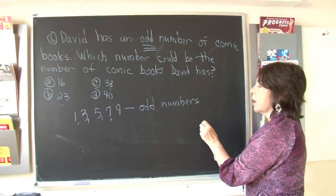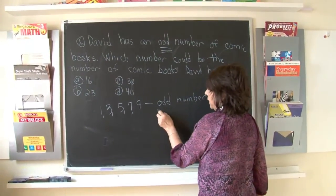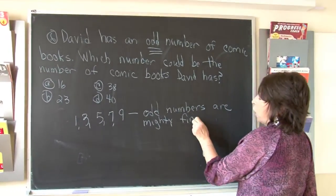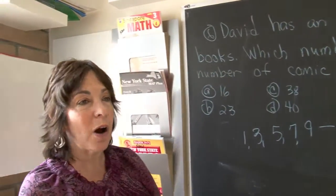One, three, five, seven, nine. Odd numbers are mighty fine. Now boys and girls, does this mean only one, three, five, seven, and nine are odd? Not at all.